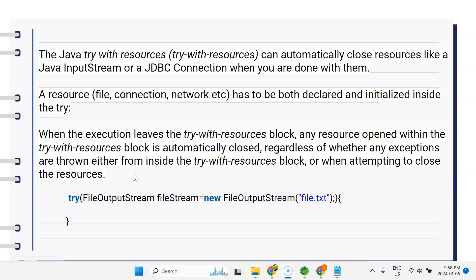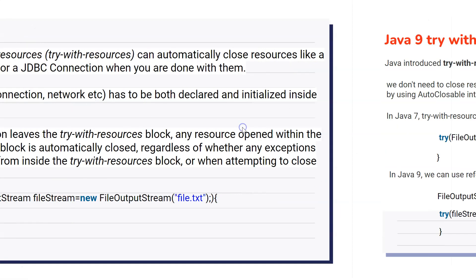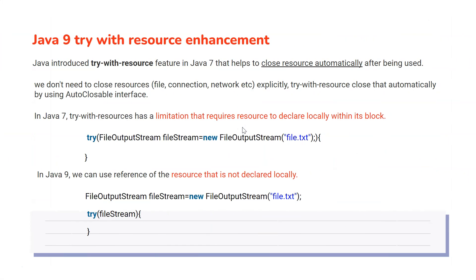When execution leaves the try-with-resources block, any resource opened within it is automatically closed, regardless of whether any exceptions are thrown either from inside the block or when attempting to close the resources. Key points: try-with-resources automatically closes resources, and a resource must be both declared and initialized inside the try itself.